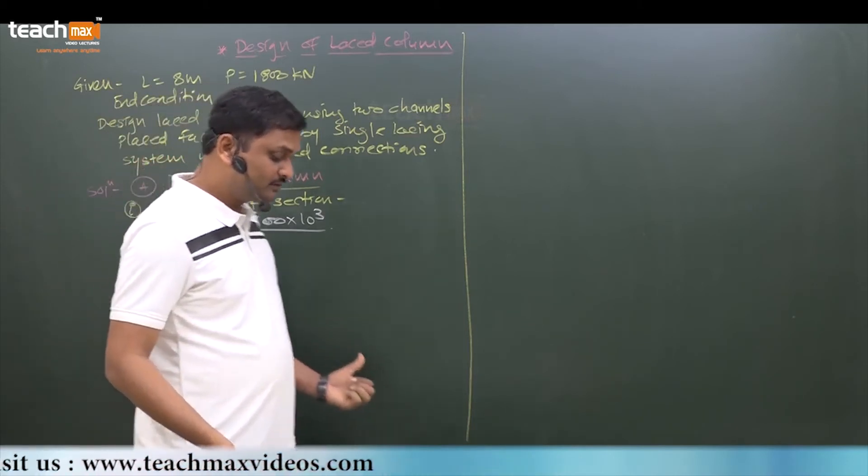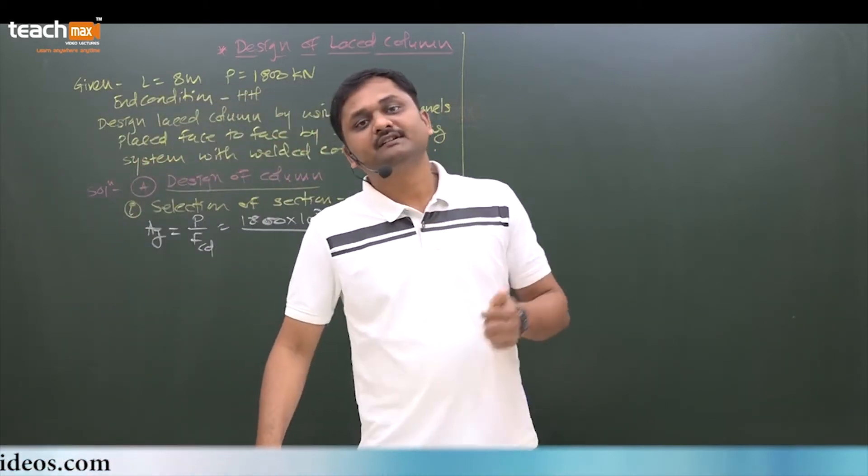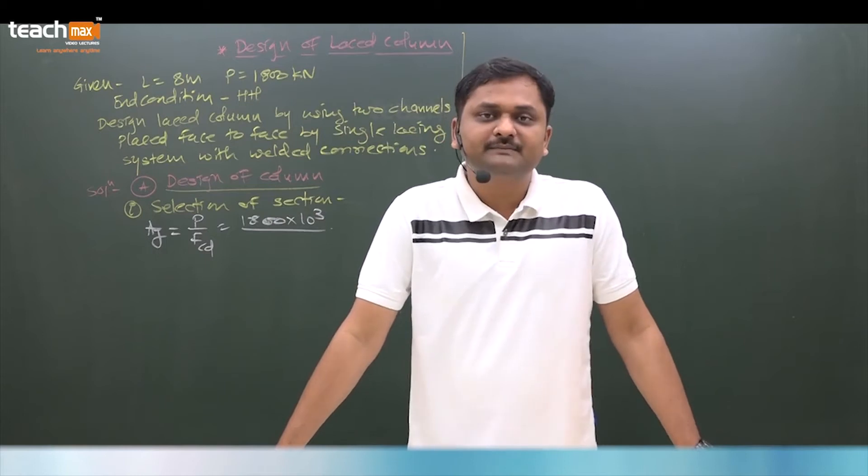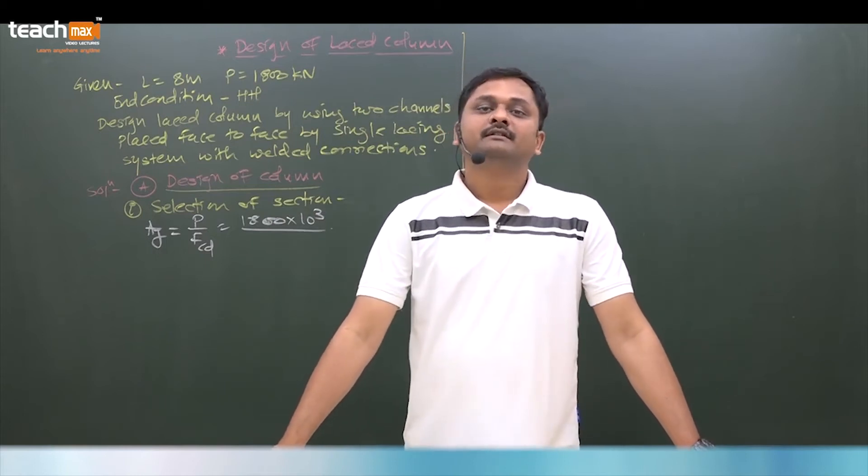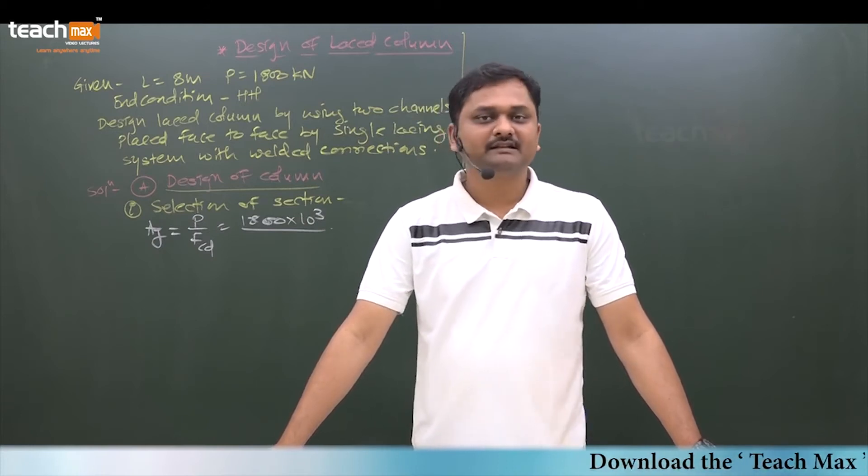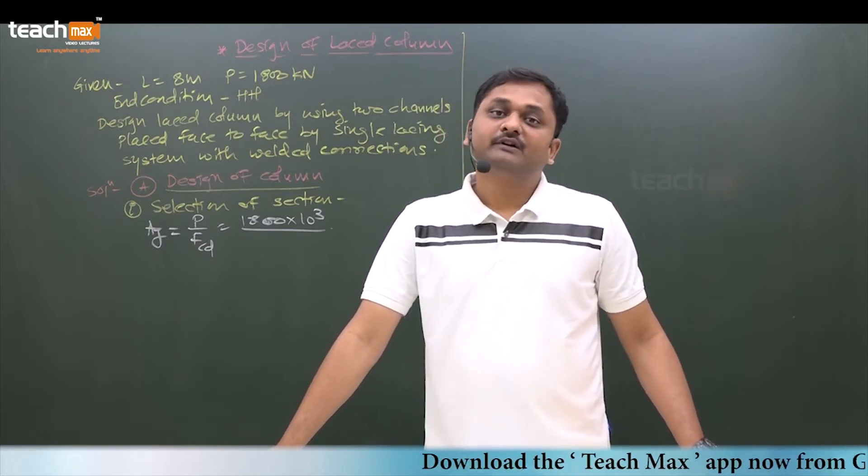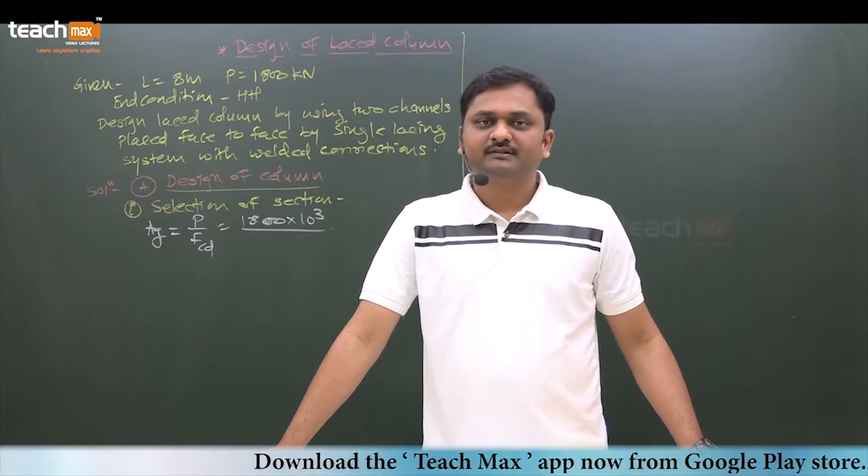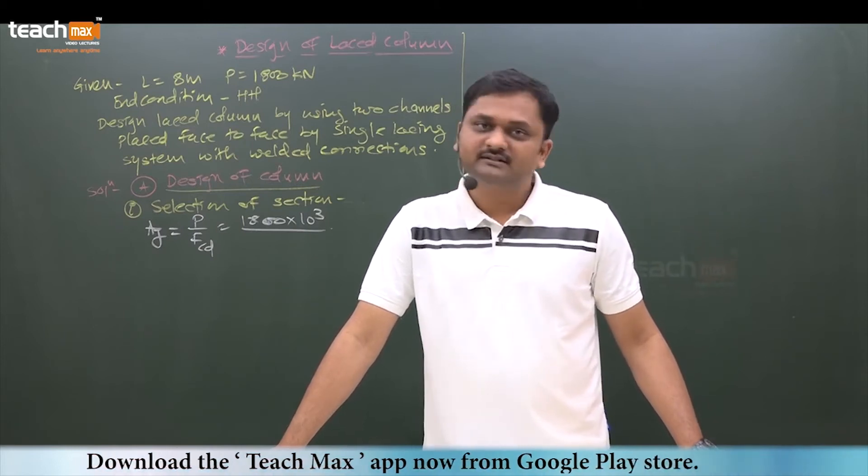This is the range of fcd for angle struts if they are used in the trusses. And for columns, moderate columns in previous lecture we discussed that there we assume fcd in between 120 to 180.